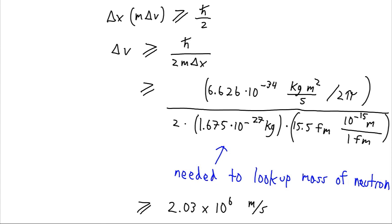Which is on order of about 1% the speed of light. So this neutron has a lot of potential energy zipping around inside of its bound state in this nucleus.